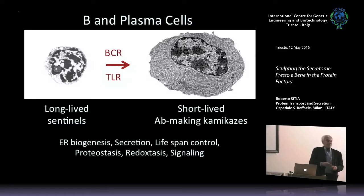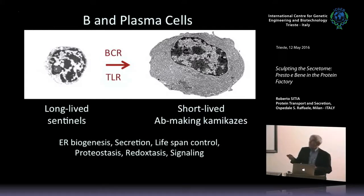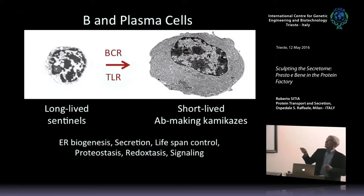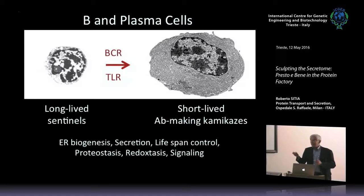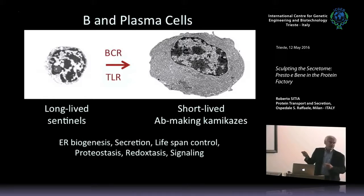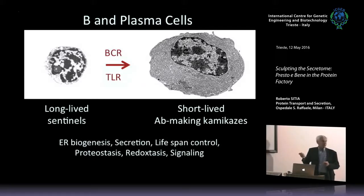How do cells manage to produce thousands of antibodies like this per second? They need to build a very efficient protein factory. You see this happening in a B cell that differentiates into a plasma cell. These small cells inhabiting your lymph nodes and spleen have hardly any cytoplasm, let alone an endoplasmic reticulum - they essentially do nothing, acting as sentinels. But when the antigen comes, in a few days they become these objects: short-lived kamikazes that make a lot of antibodies and then die.